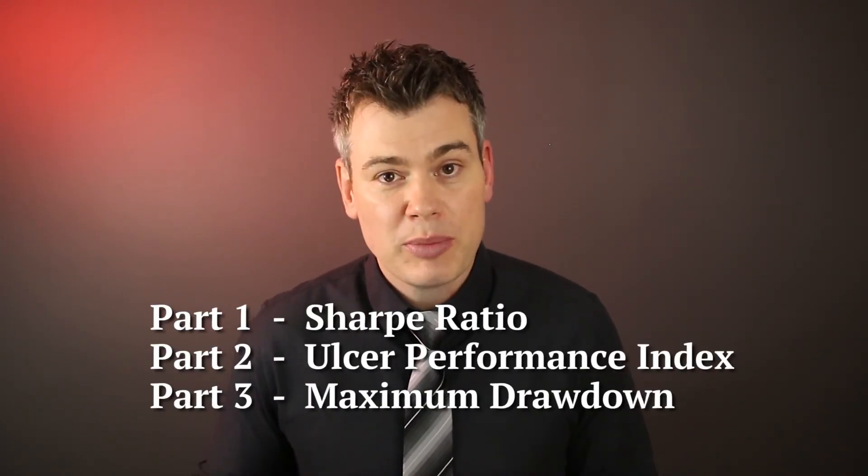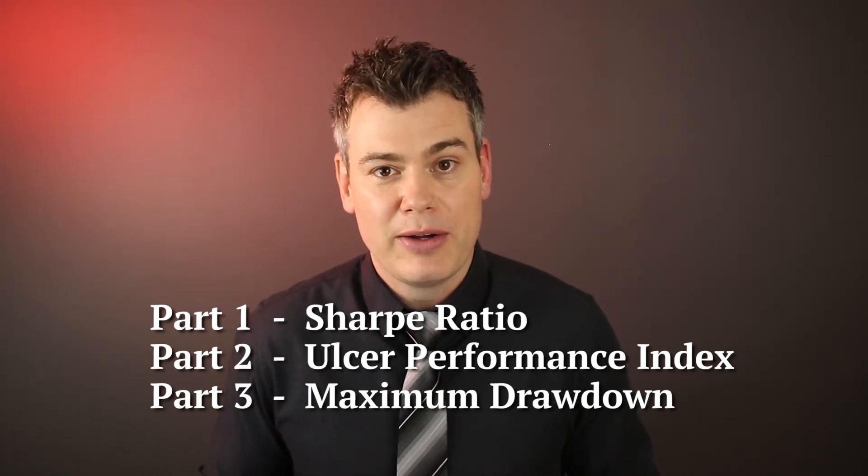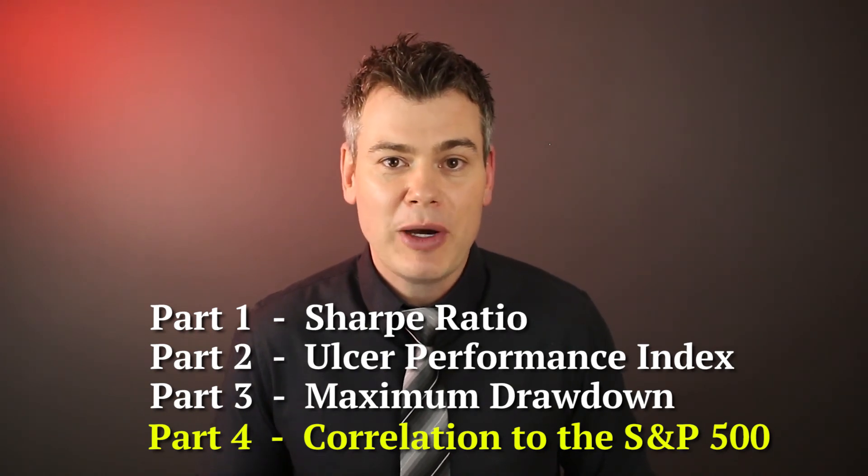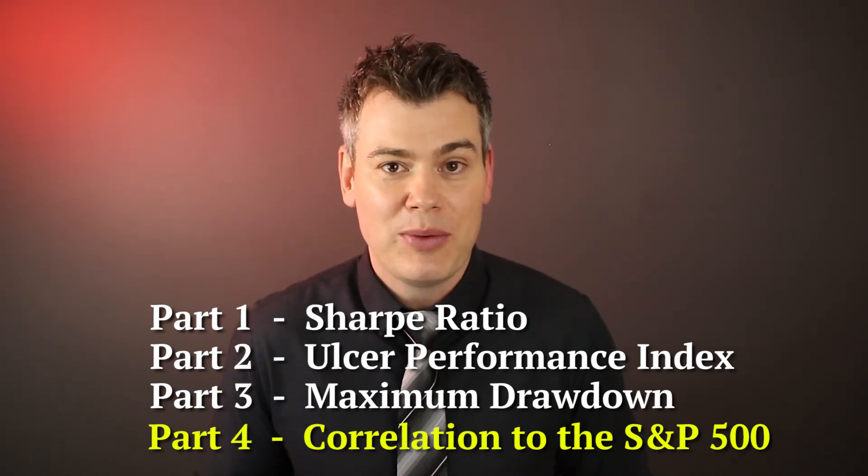Hopefully this video helps you understand why the maximum drawdown metric is a lot more important than many investors realize. The math reason: the time and rate of return required to recover becomes exponentially larger the deeper those drawdowns get. The emotional reason: investors that preserve their emotional capital may be better equipped to make sound investing decisions going forward. And the practical reason: there are few things more costly in the long run than when investors pull the plug and exit positions right in the heart of a drawdown. Making sound investing decisions is about a lot more than just rate of return. That's why we're expanding our toolbox — the Sharpe Ratio, the Ulcer Performance Index, and now the maximum drawdown. Coming up in part four, I'm going to talk about correlation to the S&P 500. See you next time.